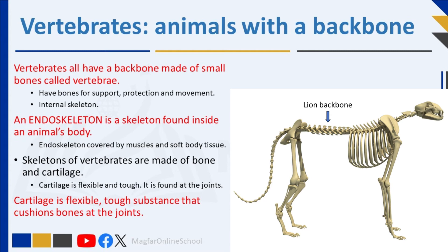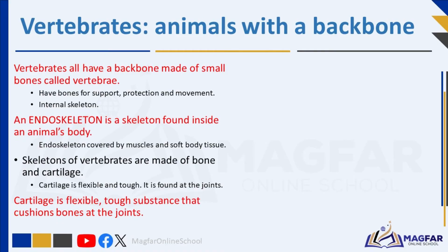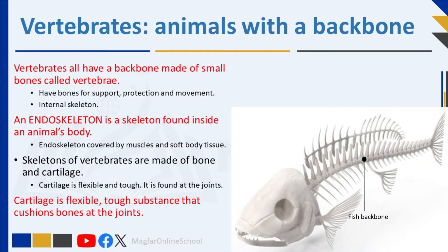Vertebrates can be bigger because they have this special inside frame — the backbone — giving them the support they need to grow larger. An endoskeleton grows with the animal and molting does not take place. Skeletons of vertebrates are made of bone and cartilage. Cartilage is flexible and tough and is found at the joints — the places where bones meet. Cartilage is a flexible, tough substance that cushions bones at the joints.